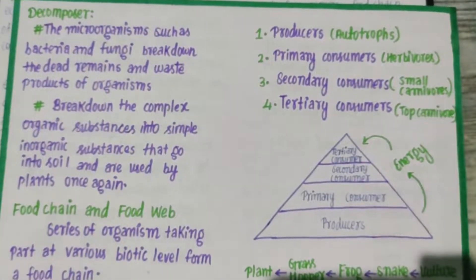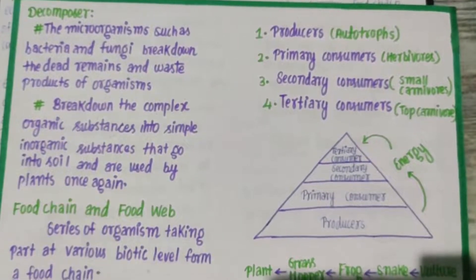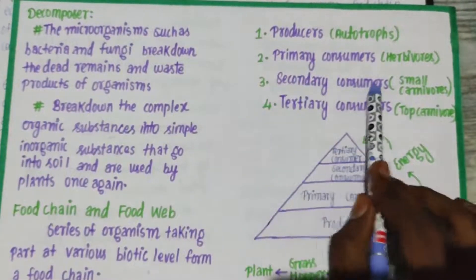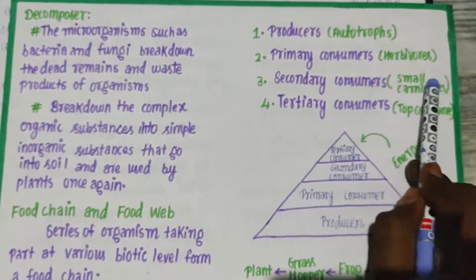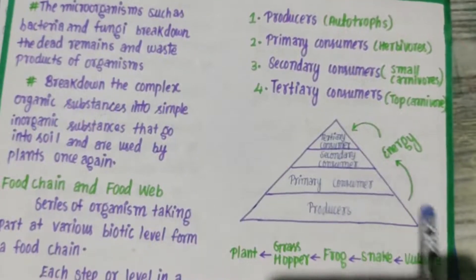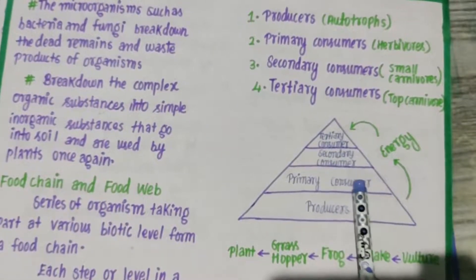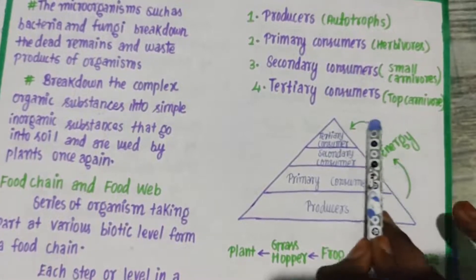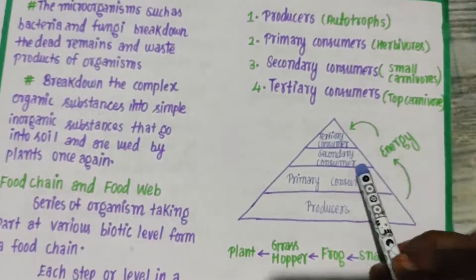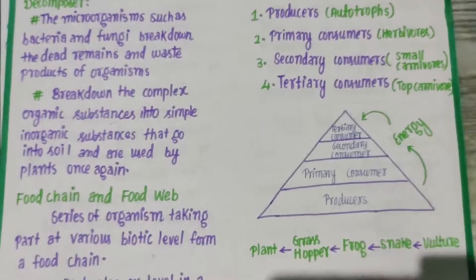The second level is secondary consumers and the third level is tertiary consumers. I have shown you this triangle with four levels: producers, primary consumers, secondary consumers, and tertiary consumers. These are the four trophic levels. What are the four trophic levels? Producer, primary consumer, secondary consumer, tertiary consumer.